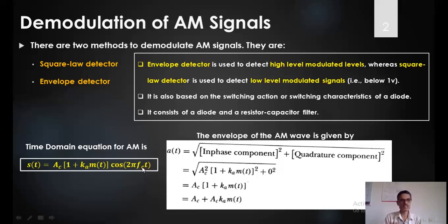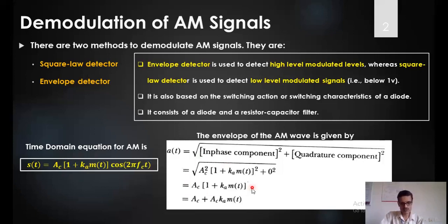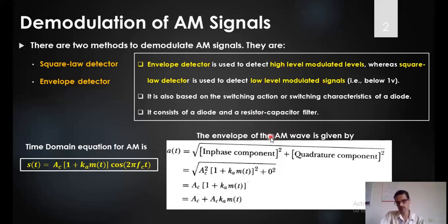What do we mean by envelope detection? The envelope is given by the root of the sum of squares of the in-phase component and the quadrature component. Going back to the AM equation, there is only the in-phase component — the quadrature component is zero. The in-phase component has amplitude equal to AC(1 + Ka·m(t)). So the envelope is AC·(1 + Ka·m(t)). When we detect the envelope of the AM wave, we get a DC parameter which can be removed, plus AC·Ka which is a constant, and m(t) is the required signal. So when we detect the envelope of the AM wave, we get back the message signal m(t).